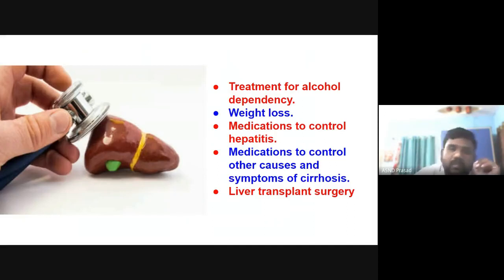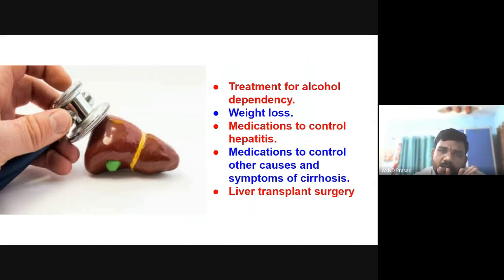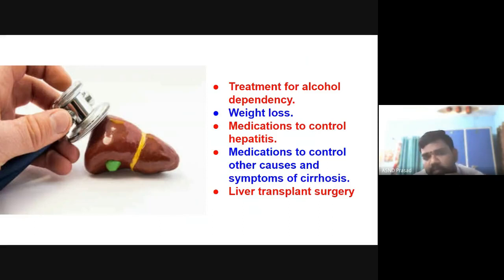Coming to treatment: first, address the cause of cirrhosis. If it is alcohol consumption, stop alcohol intake. Exercise for obesity and weight loss. For hepatitis, appropriate medication is given. Various symptoms are managed with medications. In advanced cases, liver transplantation surgery is performed — a damaged liver is replaced with a healthy donor liver. This is all about liver cirrhosis: its symptoms, causes, preventive measures, diagnostic identification, and treatment. Thank you very much.